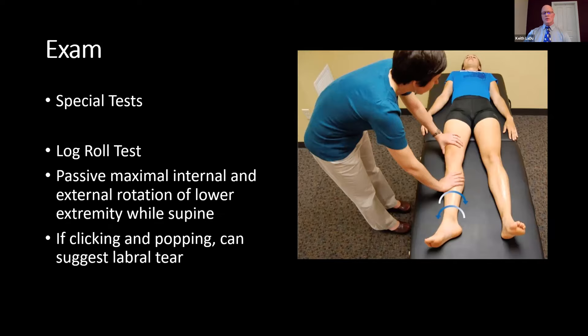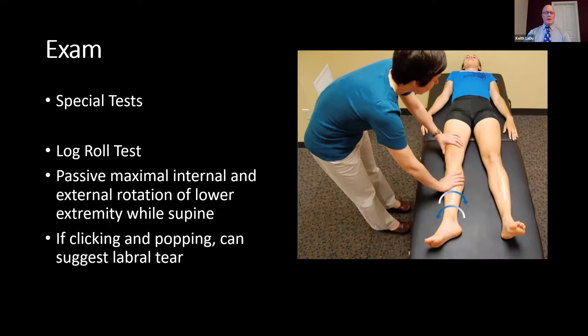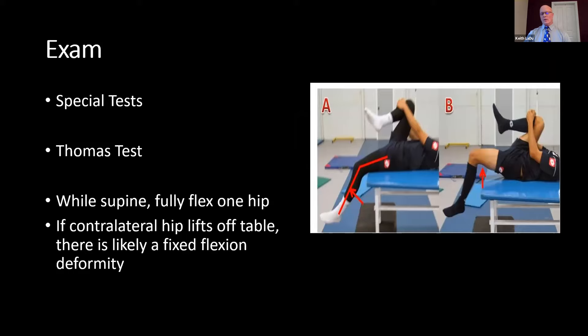The log roll test involves passive maximum internal and external rotation of the lower extremity while the patient is supine. If you get a clicking or popping sensation, that could suggest a labral tear. The Thomas test: while the patient is supine, fully flex one hip. If the contralateral hip lifts off the table, there is usually a hip flexion contracture, typically from arthritis.